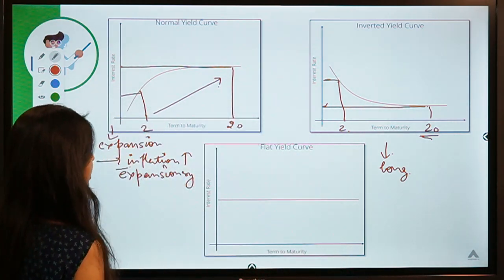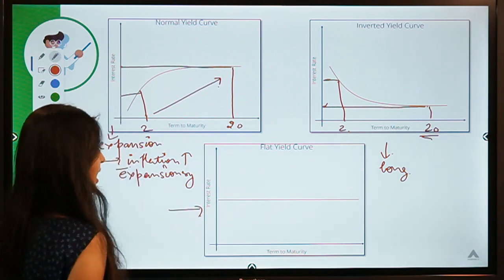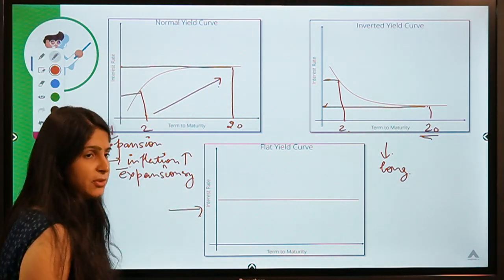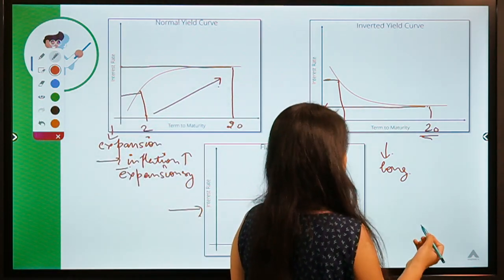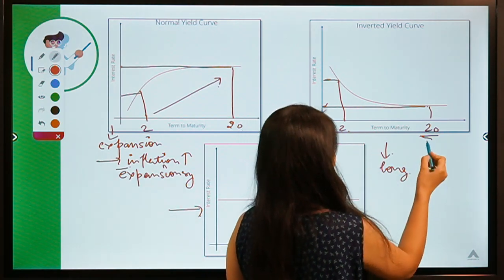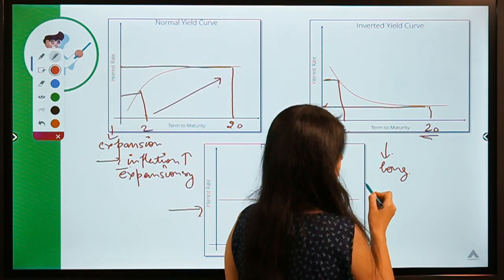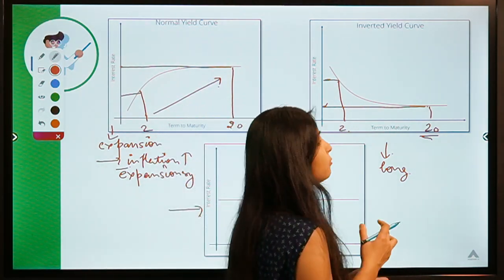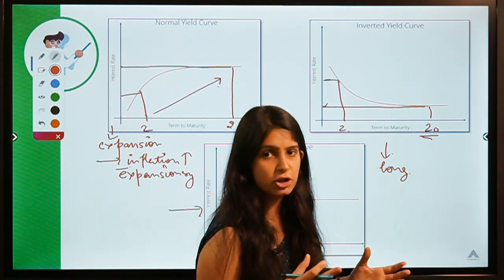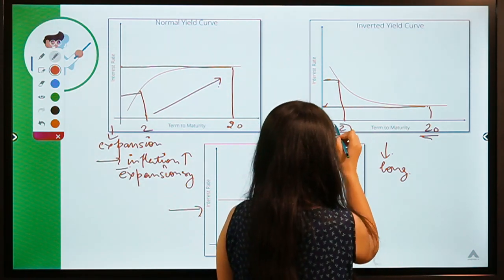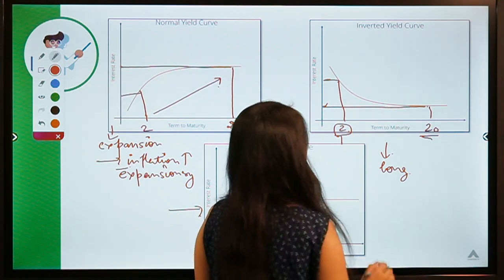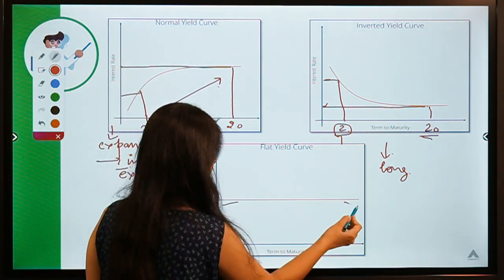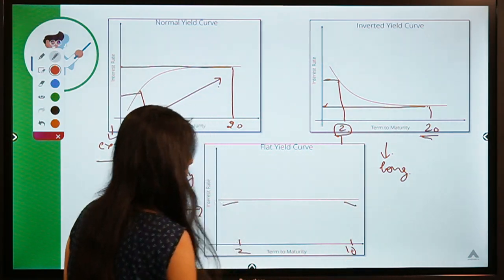Moving to the flat yield curve: in a normal yield curve an expansionary phase is expected, whereas in an inverted yield curve a recessionary phase is expected. The investor wants to buy a long-term bond now because they know future interest rates will go down — they want to lock in current higher rates. In a flat yield curve, there is no significant difference between a short-term bond and a long-term bond's interest rate.